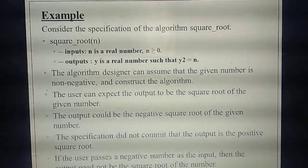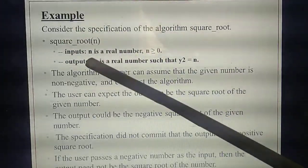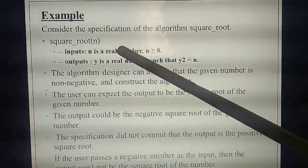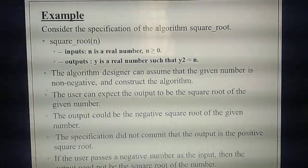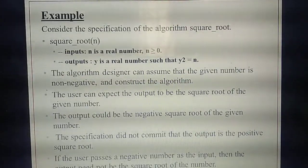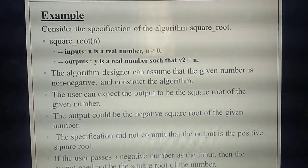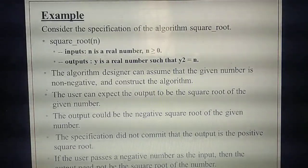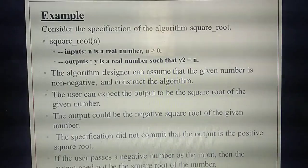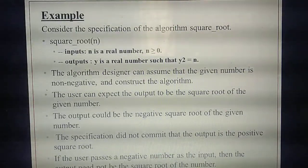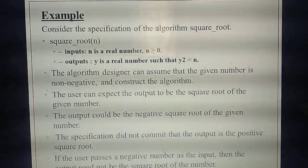If you give a positive number, output is positive. If you give a negative number, you cannot expect a negative output — because squaring gives a positive number. So specification is: algorithm name with input, written in comment lines — 'N is real, N ≥ 0,' output Y such that Y² = N. The designer's requirement is a non-negative number; the user expects to get the square root output.